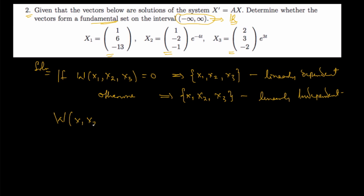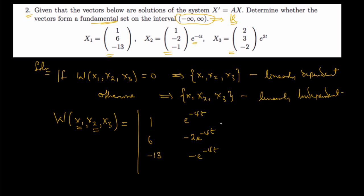We want to find the Wronskian of x1, x2, and x3. The Wronskian is simply the determinant of the matrix formed by placing the column vectors as they are. So x1 gives the column: 1, 6, negative 13. For x2, we place it as: e^(−4t), negative 2e^(−4t), negative e^(−4t). For x3: 2e^(3t), 3e^(3t), negative 2e^(3t).